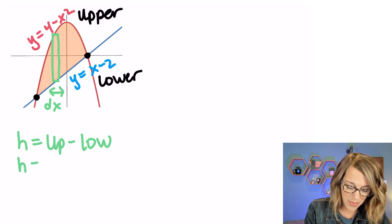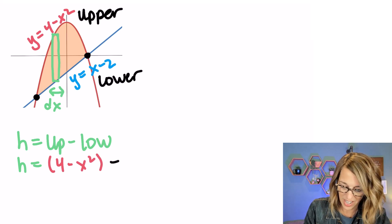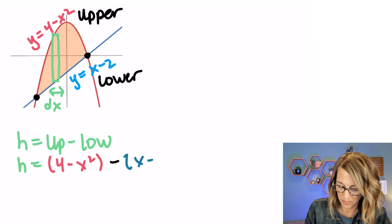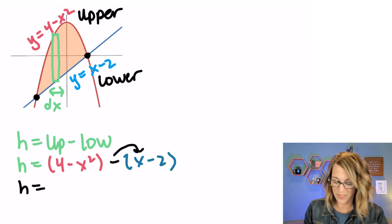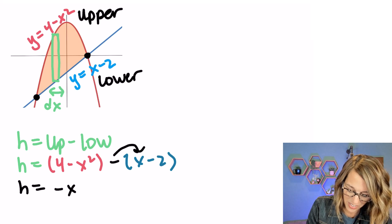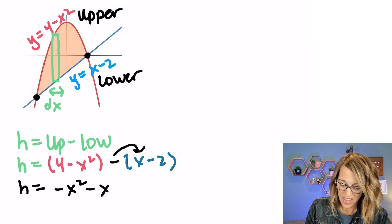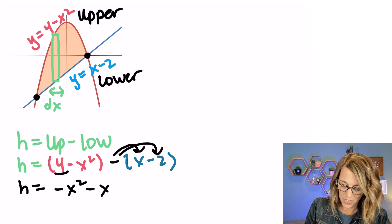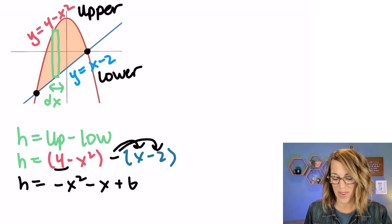In our example, that rectangle height is going to be my upper which is (4 minus x squared) minus my lower which is that line (x minus 2). Now we can simplify this — I'm going to distribute that negative and collect like terms. I get negative x squared, then the x term from negative times x gives minus x, and my constant terms are 4 minus negative 2 which gives plus 6. So the height is negative x squared minus x plus 6.